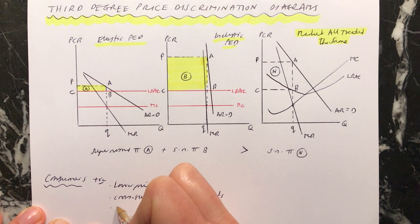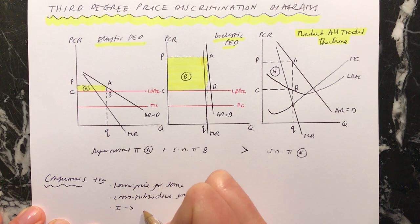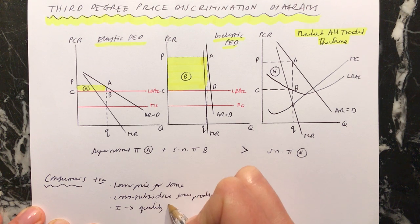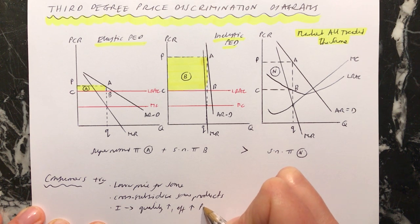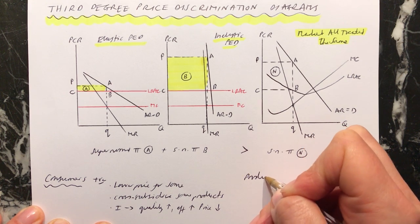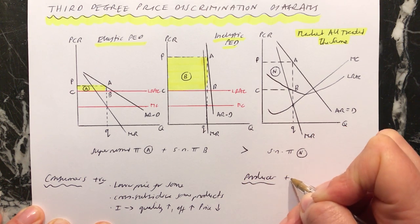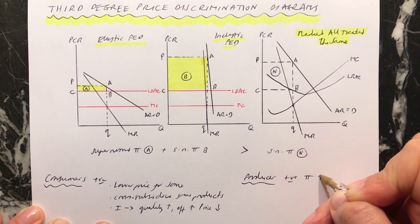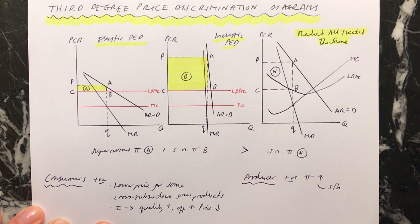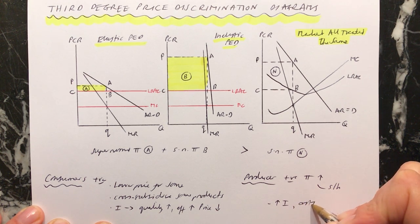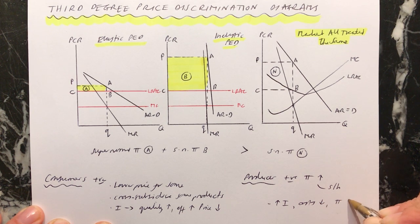Also, it's possible that the supernormal profits might be invested by the business, and this might cause quality to go up. It might also mean that, in the long run, efficiency for the business will go up, which would cause price to go down, which would also be good for consumers. We don't know that these things would happen, but they might do. For the producer, the most obvious thing here is the positive that their profits have gone up. The supernormal profits are higher. This might be good for shareholders because they might receive bigger dividends. And it might lead to increase investment, which ultimately may cause costs to come down and supernormal profits to go up.